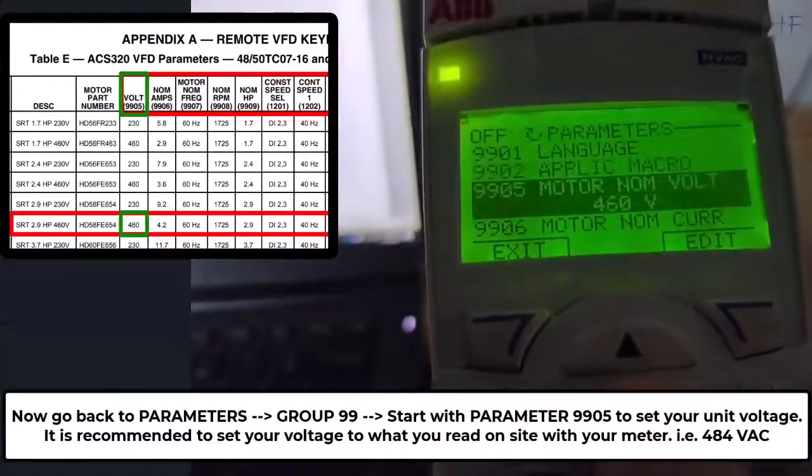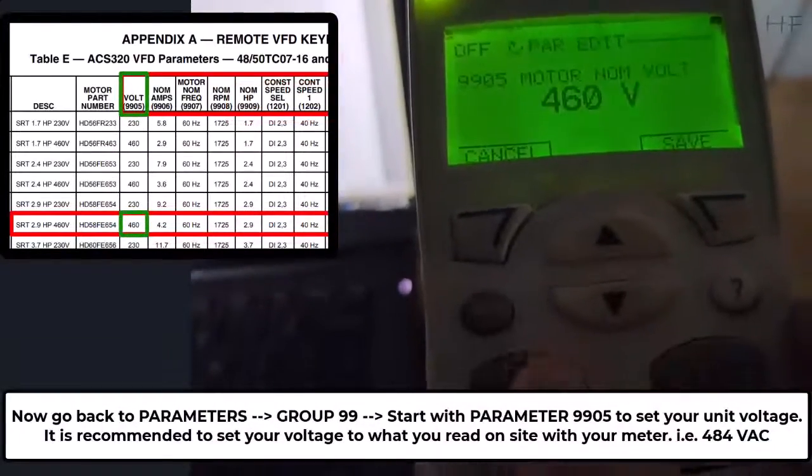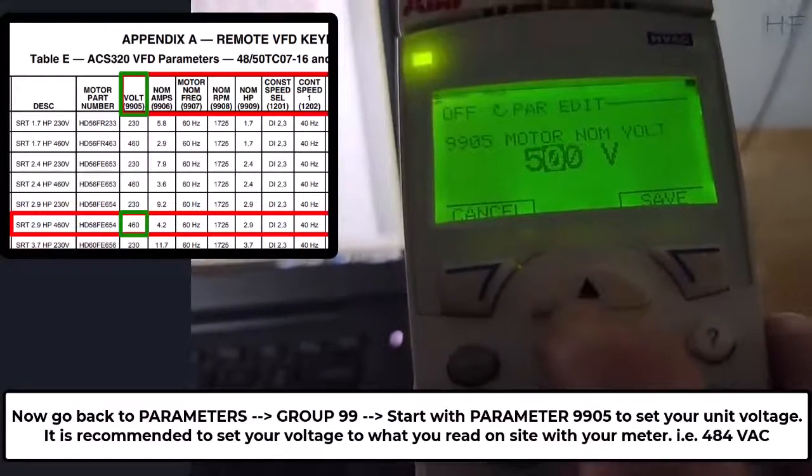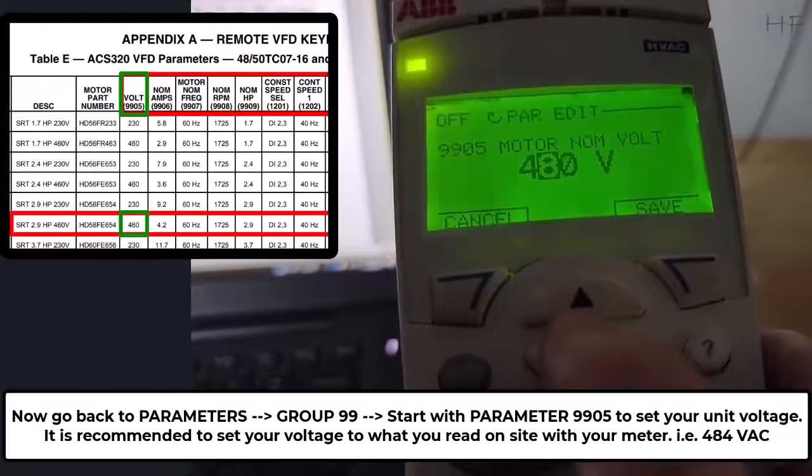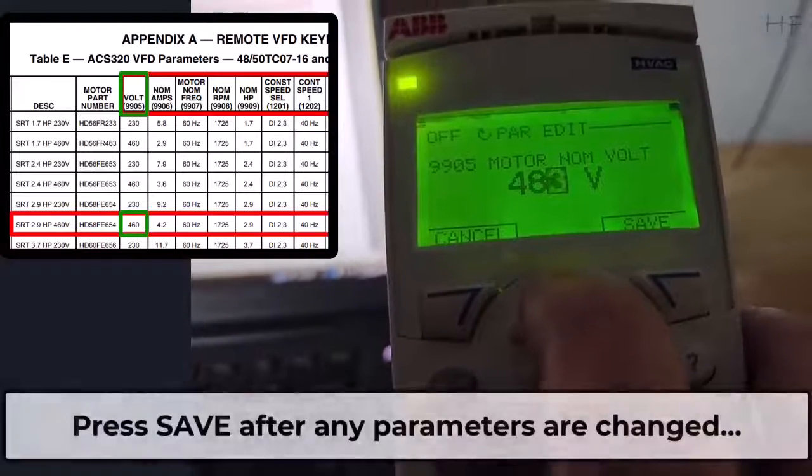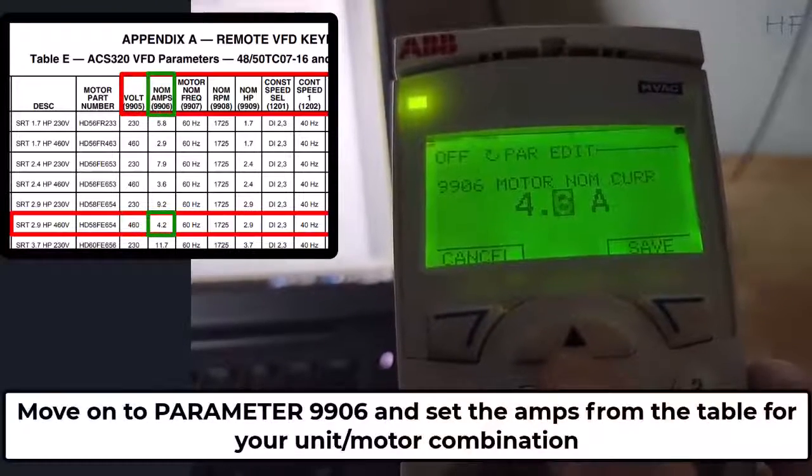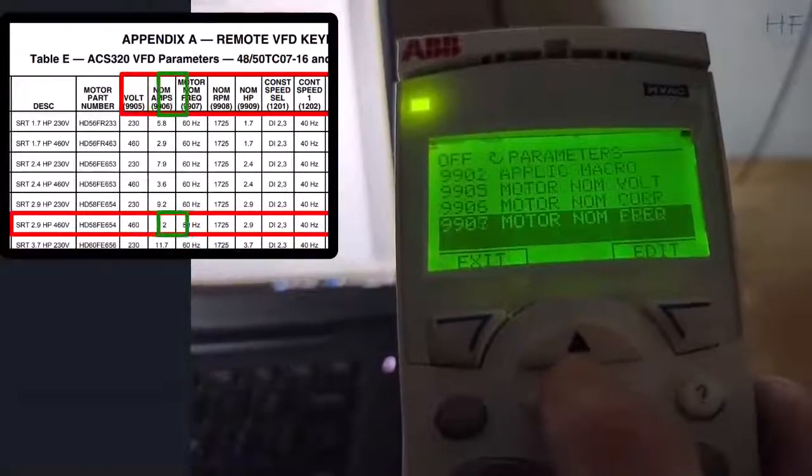Now go back to parameters, enter group 99 to find parameter 9905 and set your unit voltage. It is recommended to set your voltage to what you read on site with your meter. After changing any parameter, make sure to press save. Move on to parameter 9906 and set the value from the table for your specific unit.